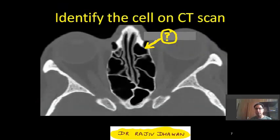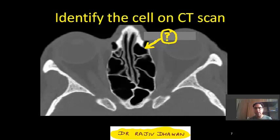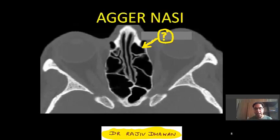The second question asked in ENT: identify the cell on the CT scan. It is a CT scan of paranasal sinuses, axial section. You can see two orbits. Between the two orbits, you are seeing the ethmoid bone, and the ethmoid bone has got many air cells. Ethmoid air cells are categorized into anterior and posterior ethmoid air cell groups. The most anterior cell of the anterior ethmoid air cell group is called agar nasi. So the answer to this question is agar nasi.